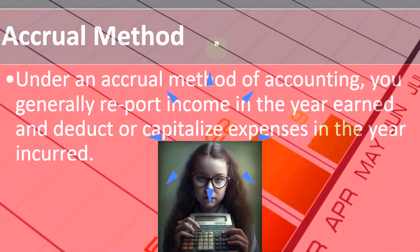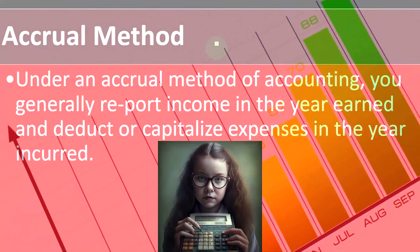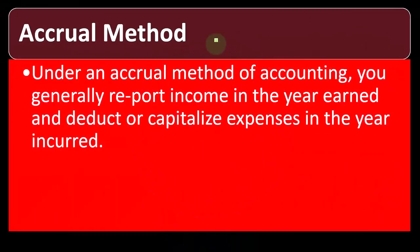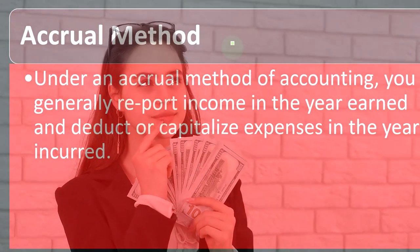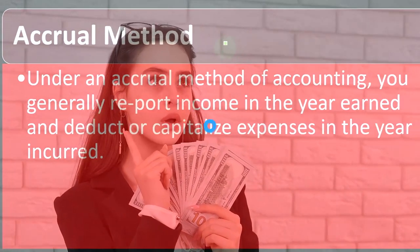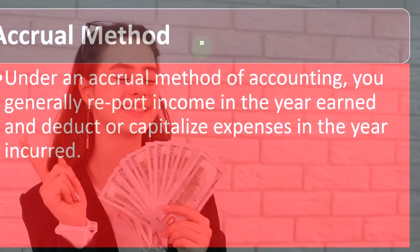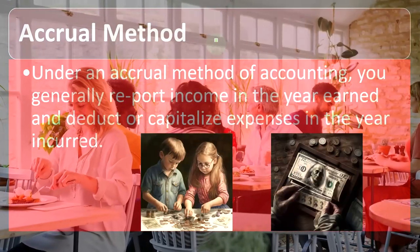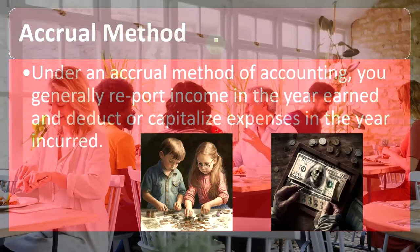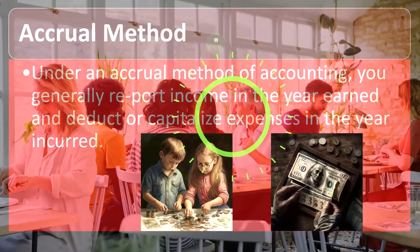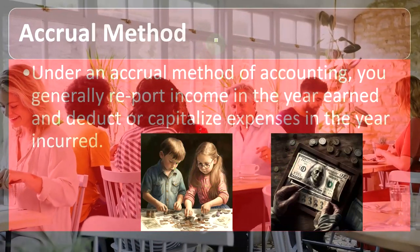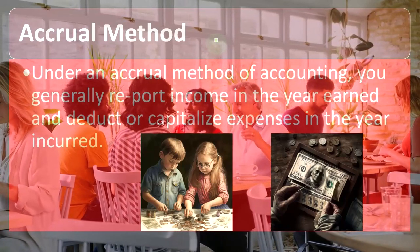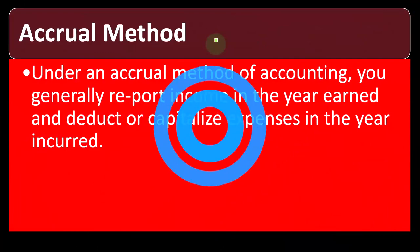Under an accrual method of accounting, you generally report income in the year earned and deduct or capitalize expenses in the year incurred, as opposed to a cash-based method where you report income when cash is received and deductions when cash is paid. Note that many transactions will be recorded the same way under either method. For example, if you were a restaurant and gave someone food and they paid you right away, under cash you'd record revenue because you received cash; under accrual you'd record revenue because you did the work — same timing, different reasons.